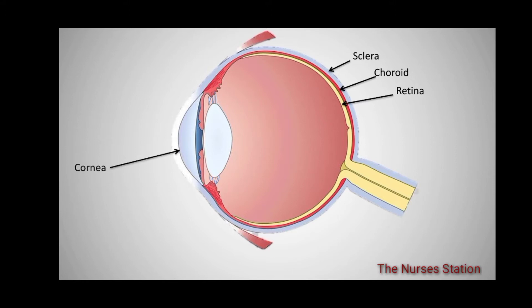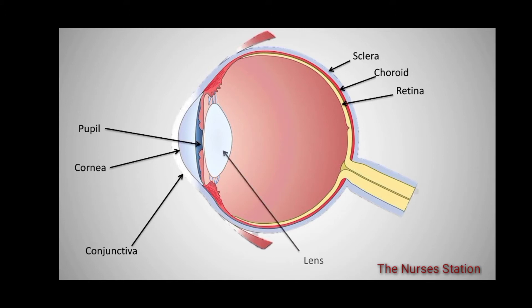On the anterior side of the eye is a bulged-out area called the cornea. The cornea and the inner surface of the eyelids are covered by the clear membrane called the conjunctiva. The pupil is the hole in the iris through which light enters the eye, and behind it is the crystalline lens which focuses the light on the retina.